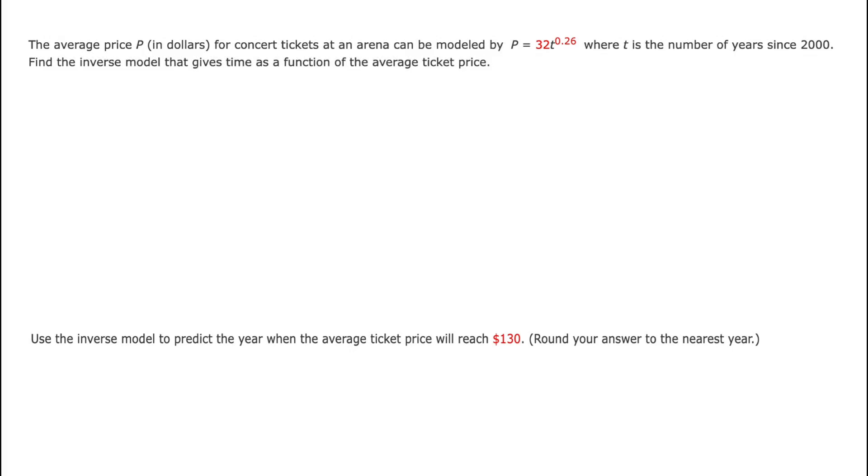The average price p in dollars for concert tickets at an arena is modeled by p equals 32t to the 0.26 power, where t is the number of years since 2000. I want to find an inverse model that would give time as a function of price.